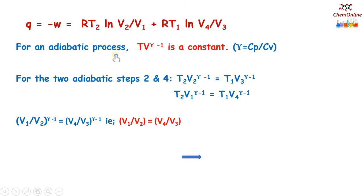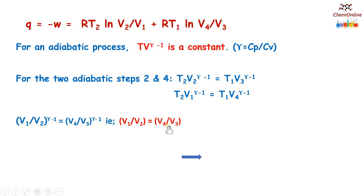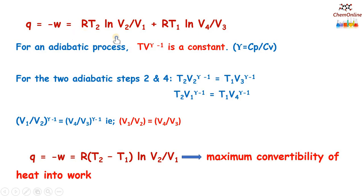For an adiabatic process, TV^(gamma minus 1) is a constant, where gamma equals Cp/Cv. Considering the two adiabatic steps: T2·V2^(gamma-1) equals T1·V3^(gamma-1), and T2·V1^(gamma-1) equals T1·V4^(gamma-1). Dividing these two equations gives V1/V2 equals V4/V3. Substituting this relation, we get Q equals minus W equals R(T2 minus T1)·log(V2/V1). Since all steps in the Carnot cycle are reversible, this equation represents the maximum convertibility of heat into work.